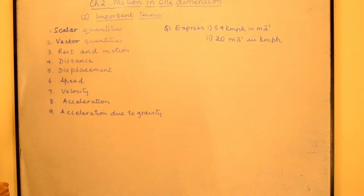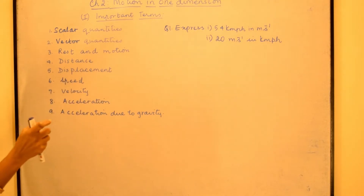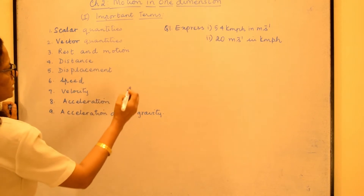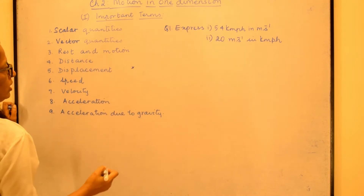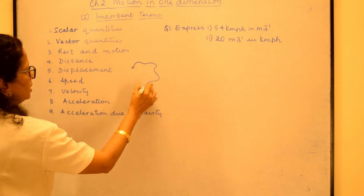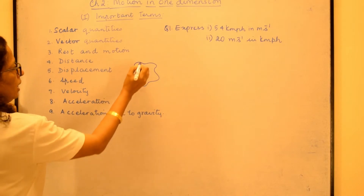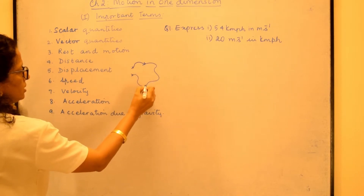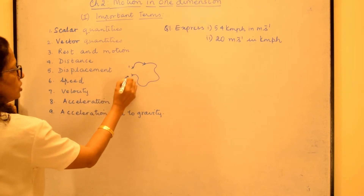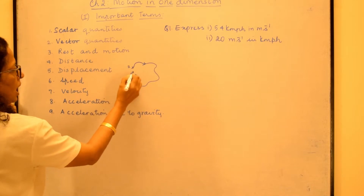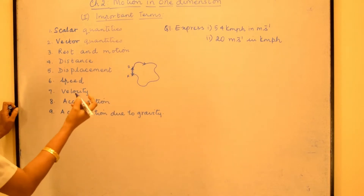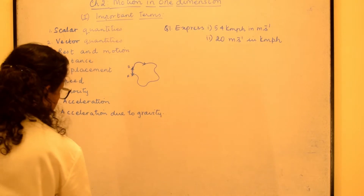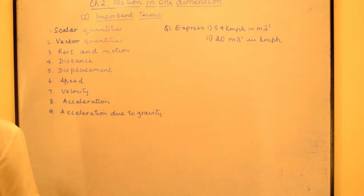Then we come to distance. Distance is the linear distance traveled by the body, whereas displacement is the shortest distance between the two positions. Let us see the difference: say we have an ant moving from one point and coming up to another point along a curved path — that path is the distance traveled. But the displacement will be the straight line between the initial position and the final position.